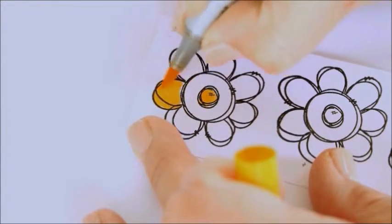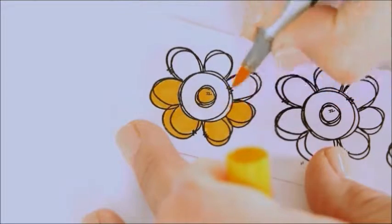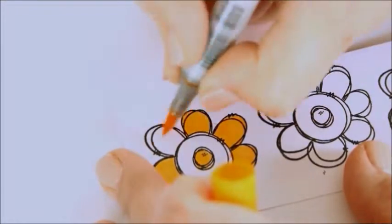Then I colored in parts of each flower with a yellow and an orange Copic marker. You can use whichever coloring medium you like for this step. I just wanted something super quick and simple.